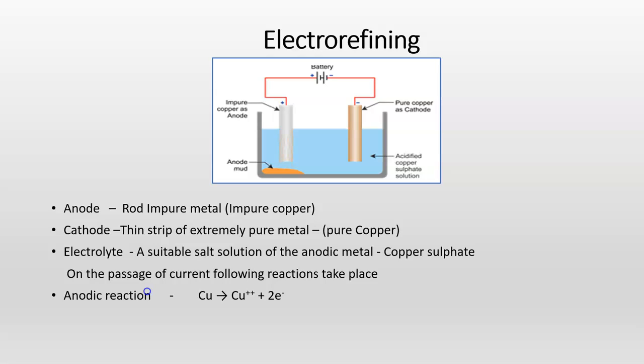the copper from the anode ionizes to give you copper ions. These copper ions accept electrons and get deposited over the cathode. The impurities settle at the bottom of the anode as anode mud.